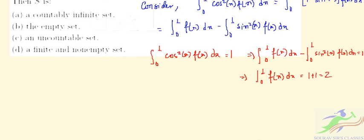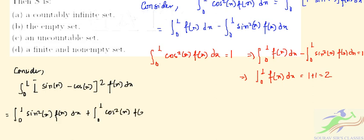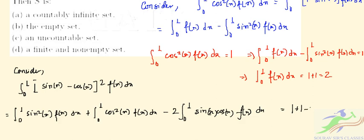Now consider the integral ∫₀¹ (sin(x) - cos(x))² f(x) dx. Expanding this gives ∫₀¹ sin²(x) f(x) dx + ∫₀¹ cos²(x) f(x) dx - 2∫₀¹ sin(x)cos(x) f(x) dx. Substituting the known values: 1 + 1 - 2 = 0.